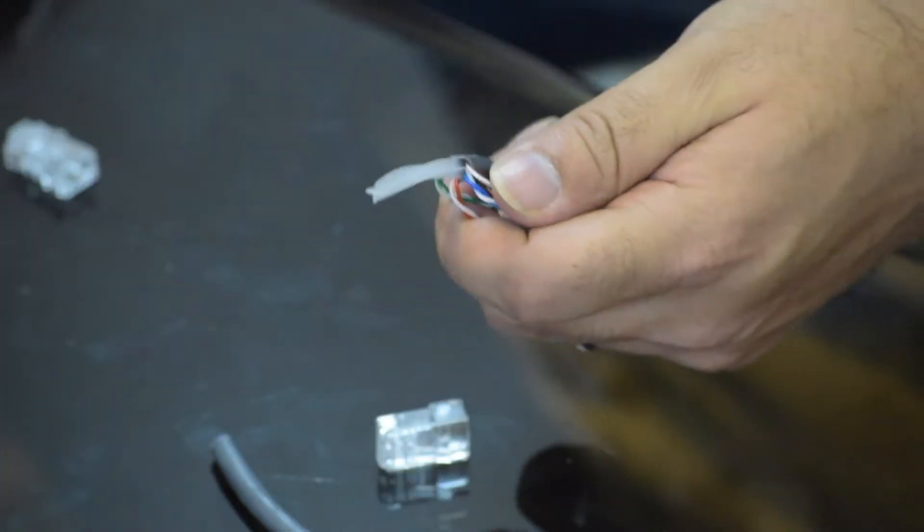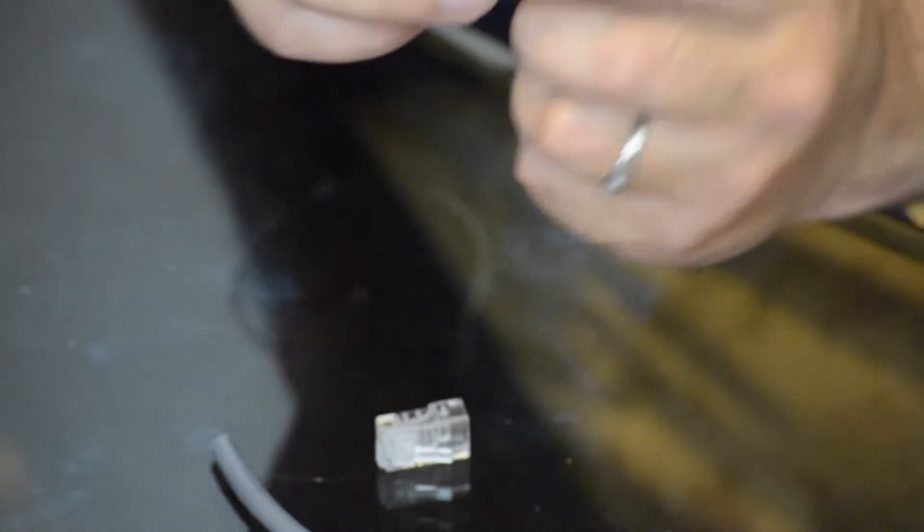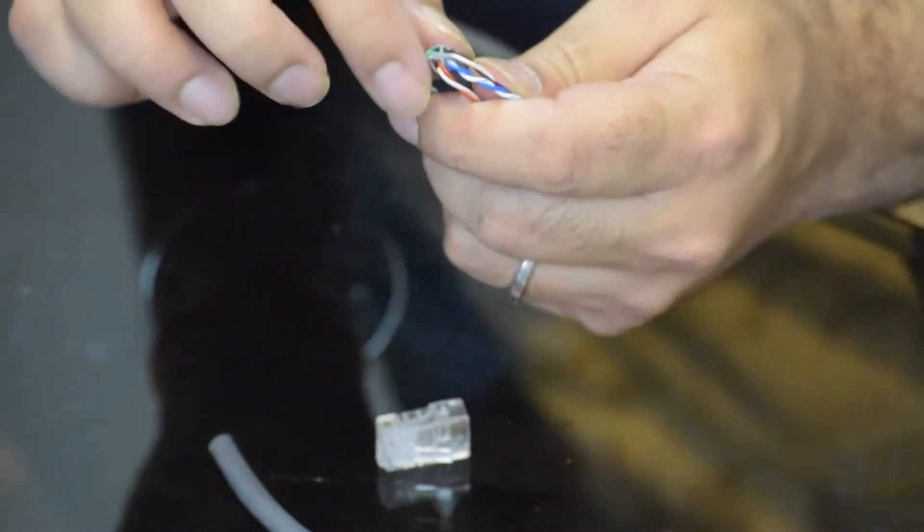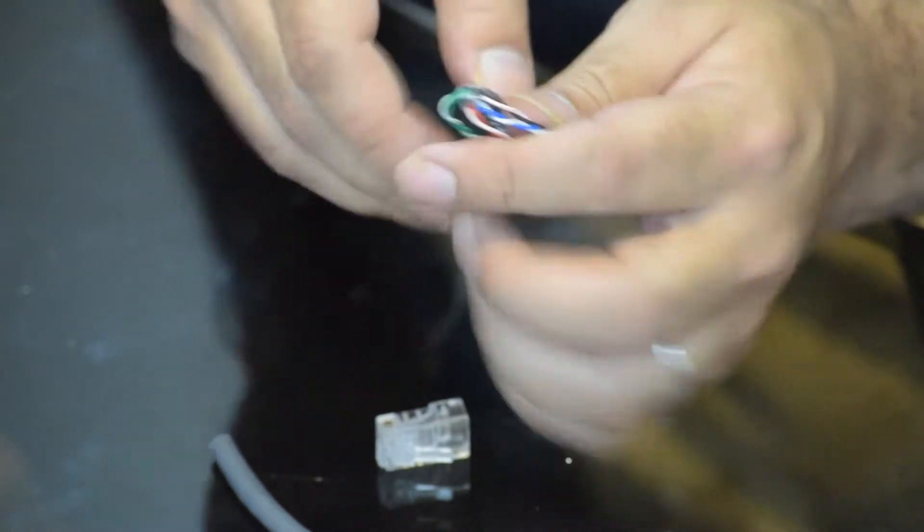So we don't need this plastic separator anymore. You could either use the knife or the crimping tool's blade to chop it off. Just make sure to take care not to put a slice or a cut on any of these strands.